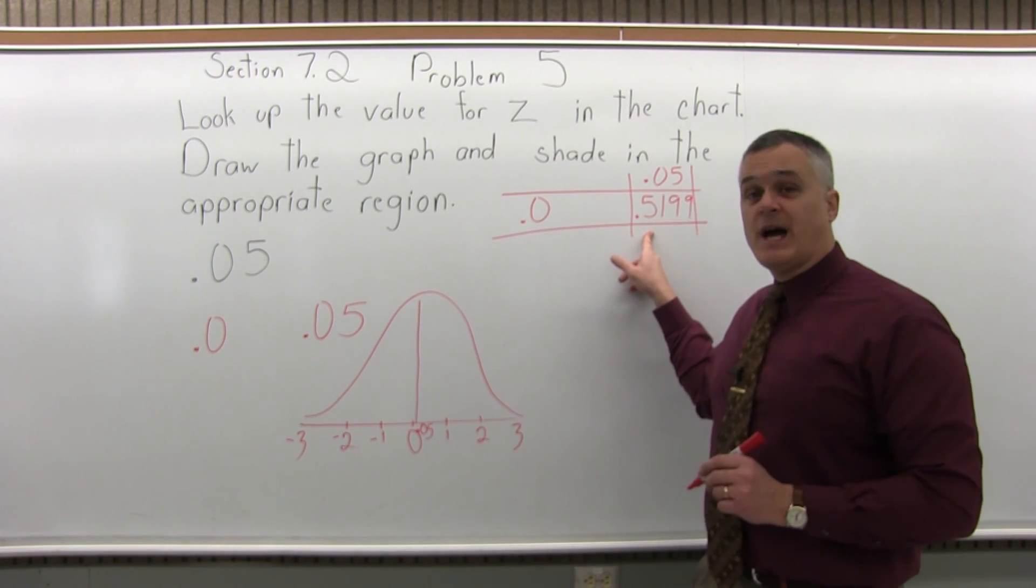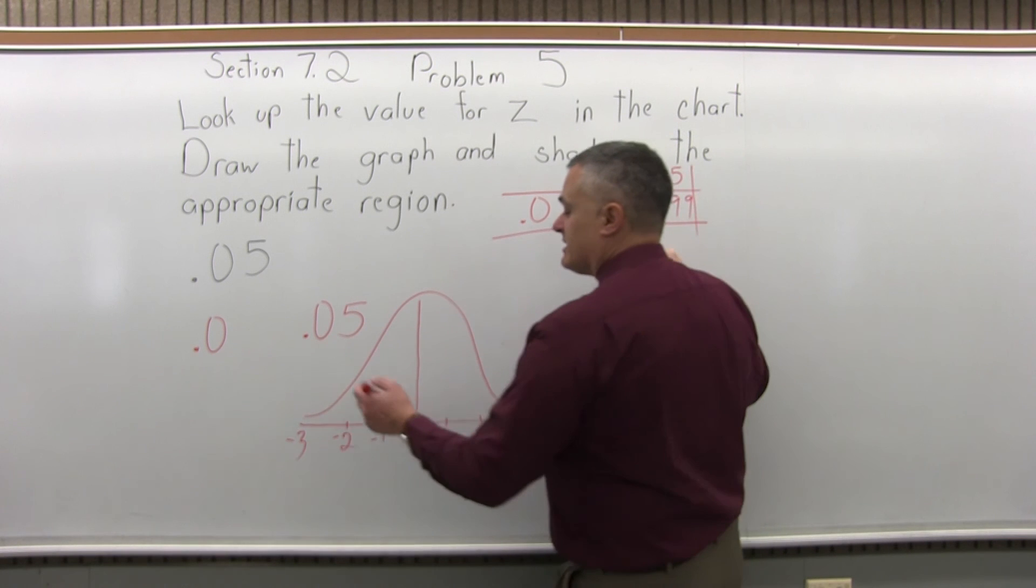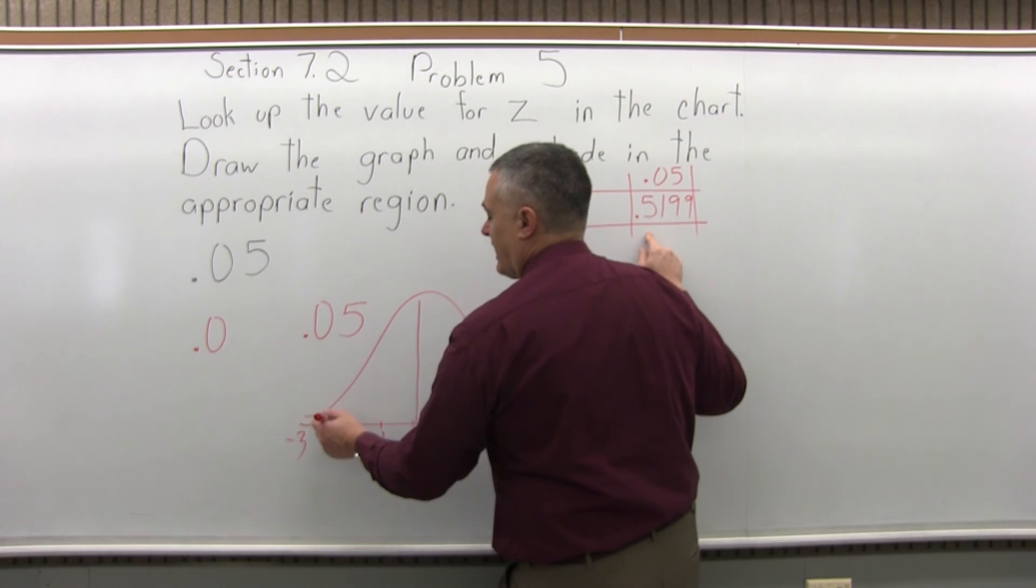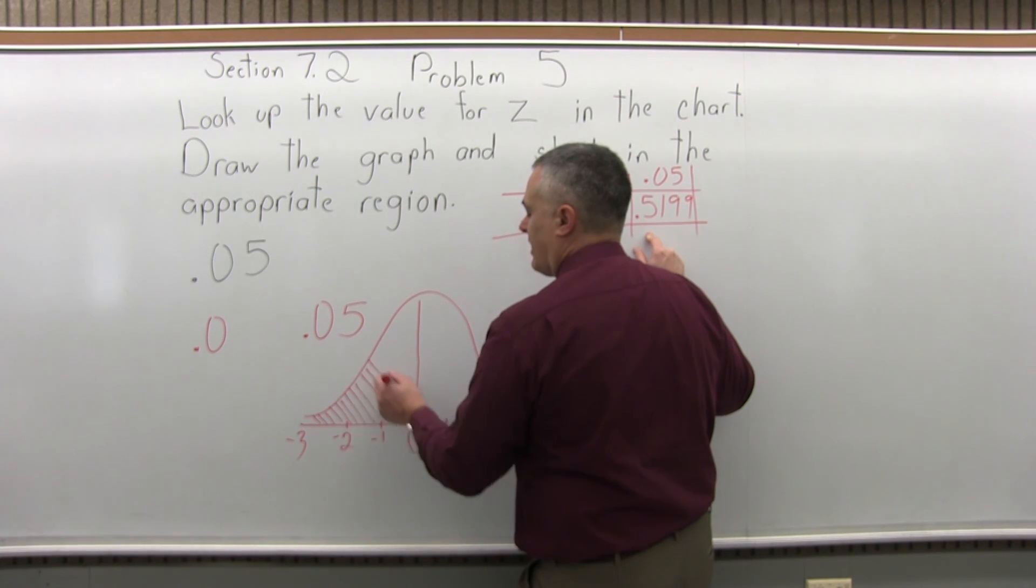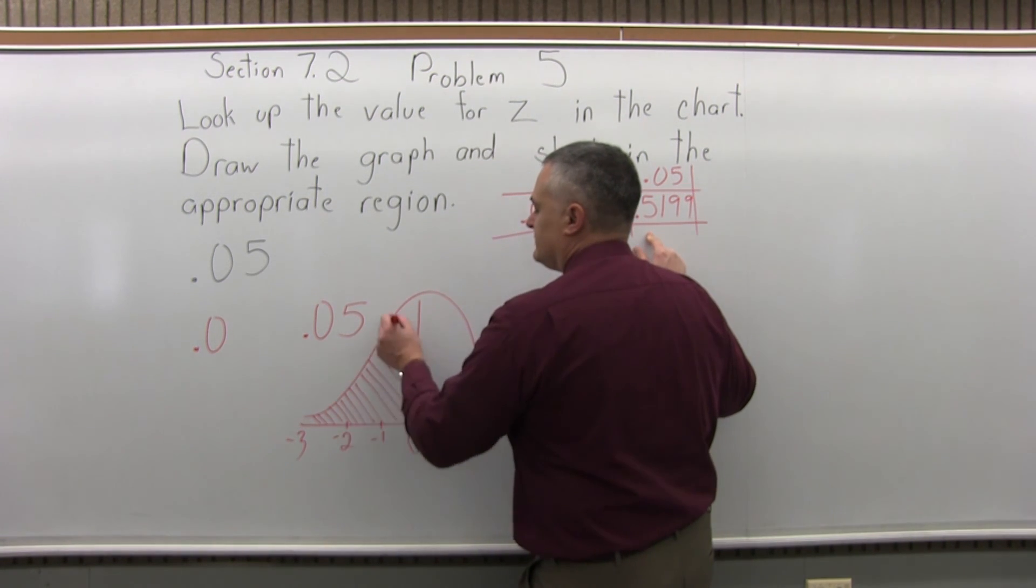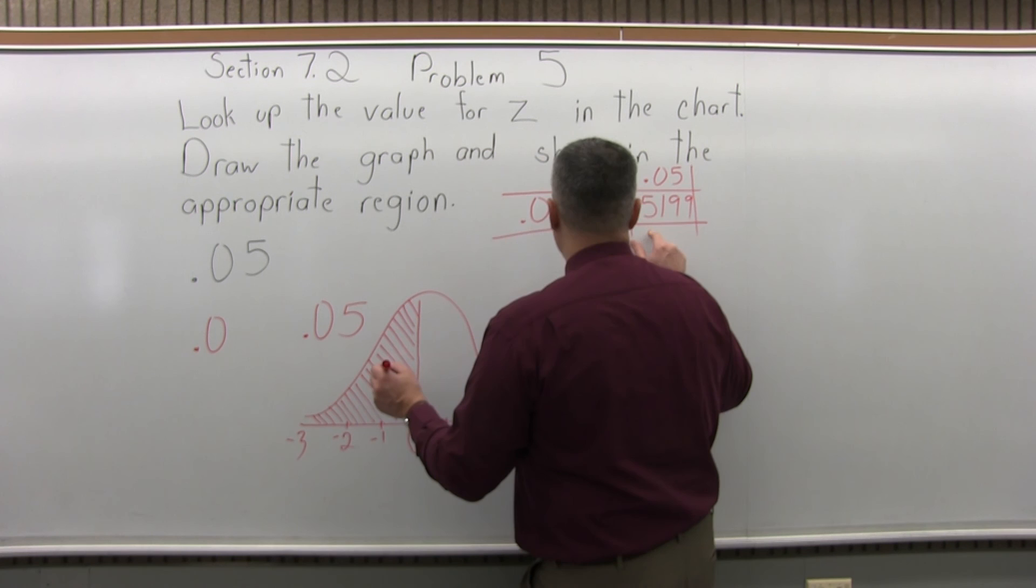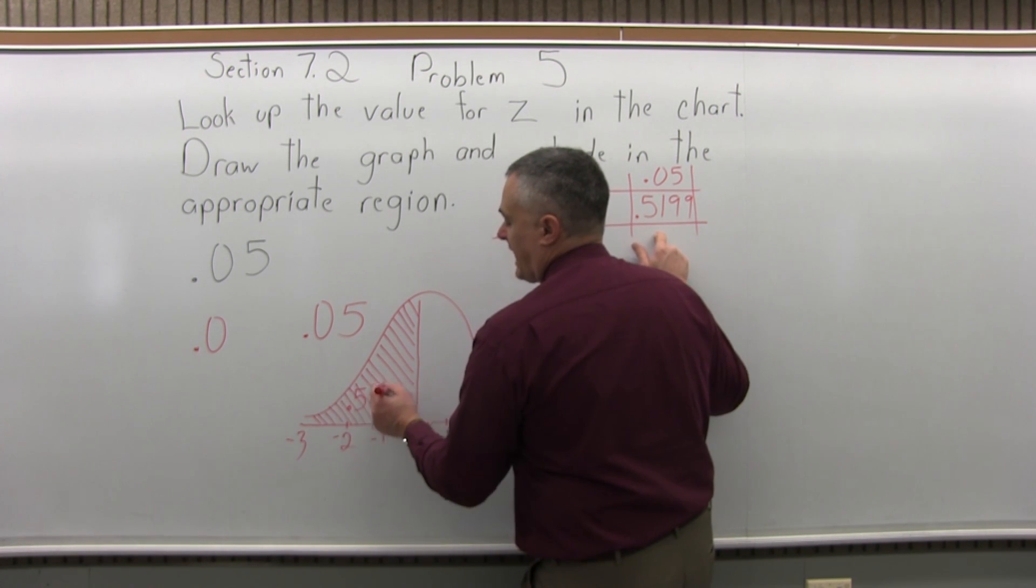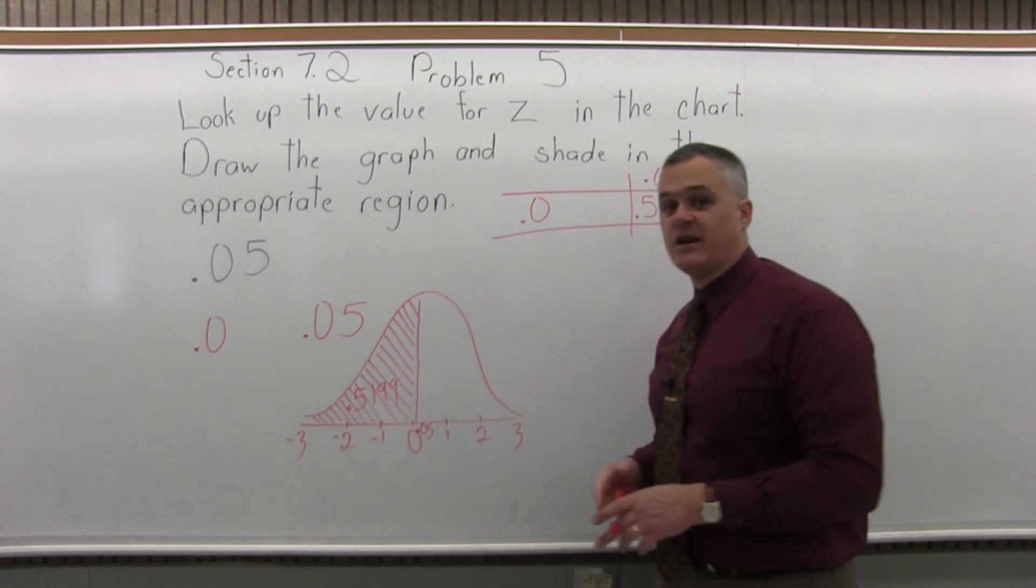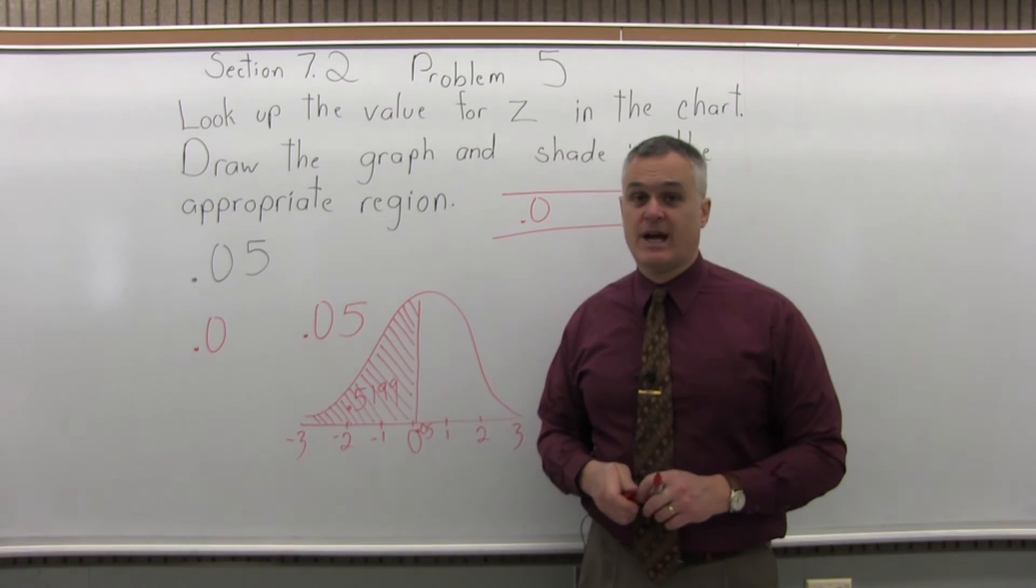Now, the .5199 that we got from the chart is the probability of being to the left of the value we just looked up. So I'll shade it in with these diagonal lines. And that shaded area has an area of .5199, so the probability of being in that area is .5199, or almost a 52 percent probability.